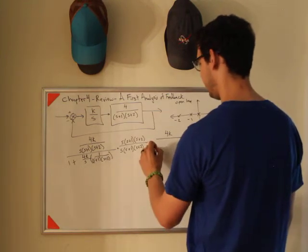I'm going to multiply by the denominator, and then the numerator I'm just going to get 4K. In the denominator, I'm going to get s, s plus 1, s plus 2, plus, and it looks like I just get 4K.